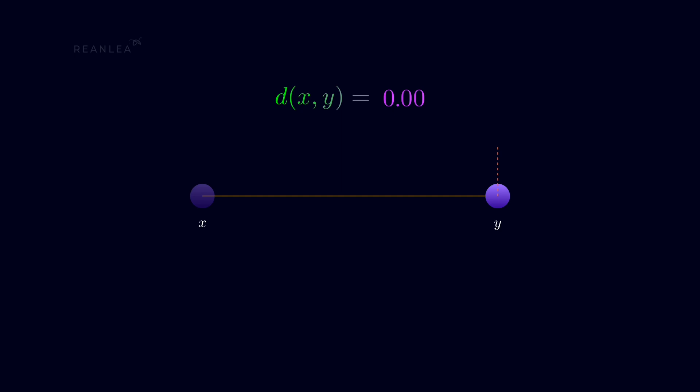In other words, less the distance between two points be, more closer the points are to each other and vice versa. And the distance between two points varies continuously with respect to their respective positions.